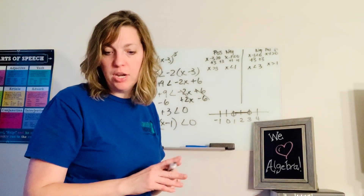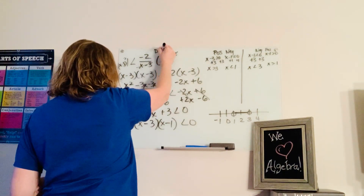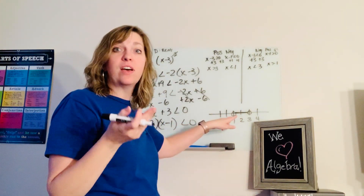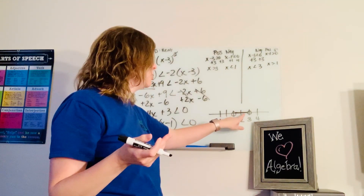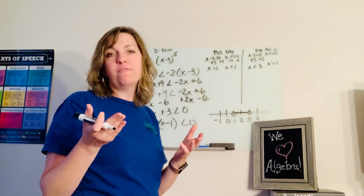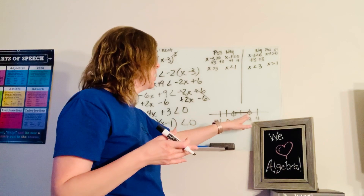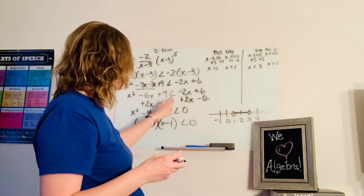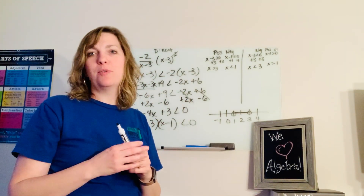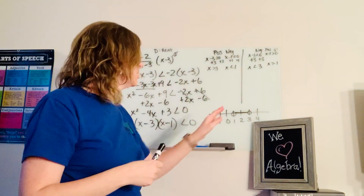I'm multiplying both sides by x minus 3 squared. That's going to eliminate the denominator, and it eliminates one of those, but I'll still have negative 2 times one of them. So I'll have x minus 3 squared, because it was times 1, is less than negative 2 times x minus 3. Now let's FOIL that: first, outer, inner, and last. First: x squared. Minus 3x, minus 3x, plus 9. Negative 3x plus negative 3x is negative 6x.